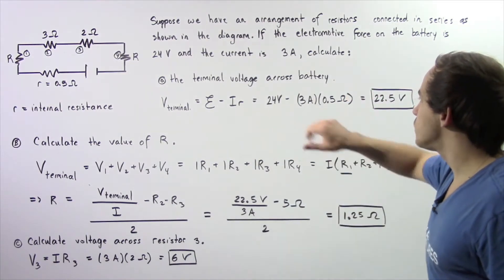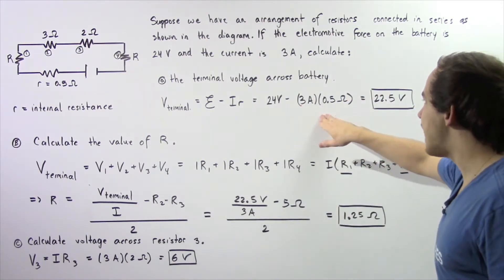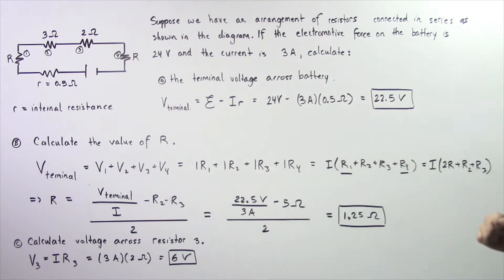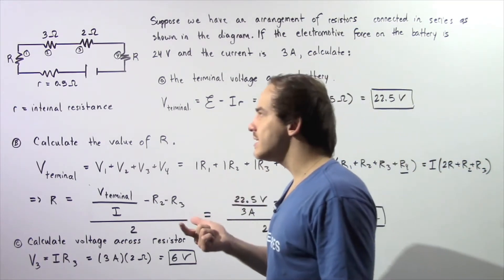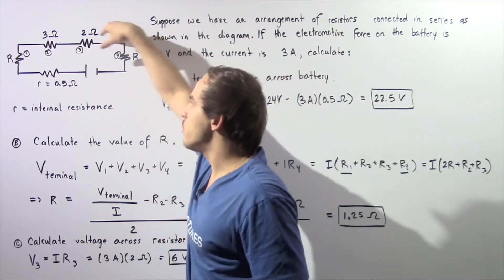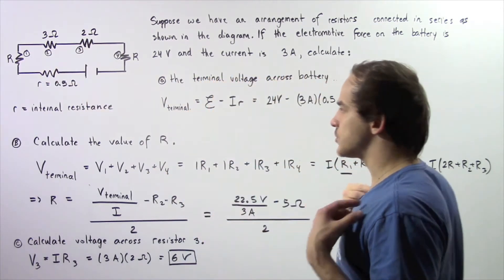So 24 volts minus 1.5 volts gives us 22.5 volts, which is the terminal voltage across our battery that exists when our electrons are flowing through our electric circuit.